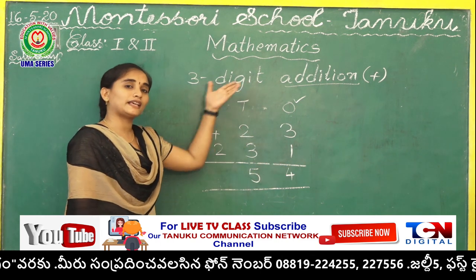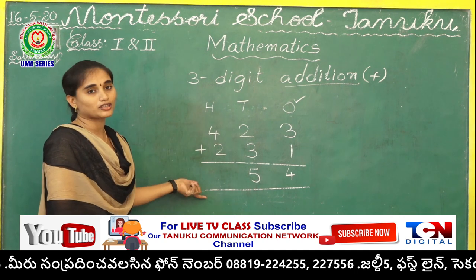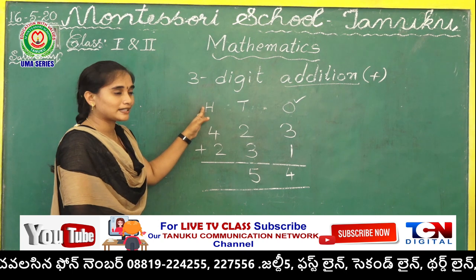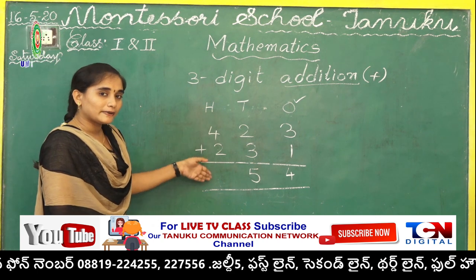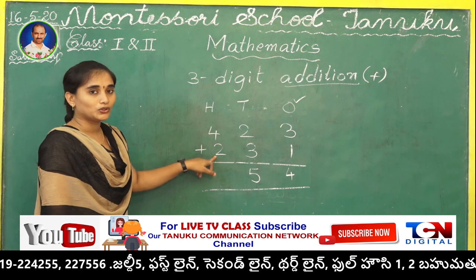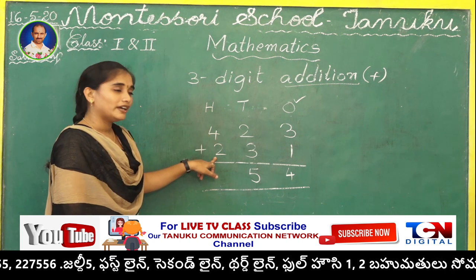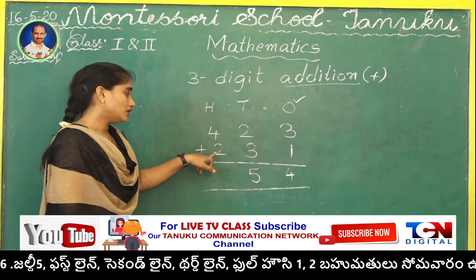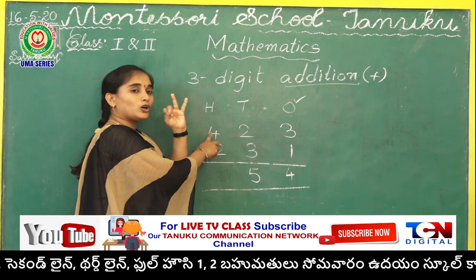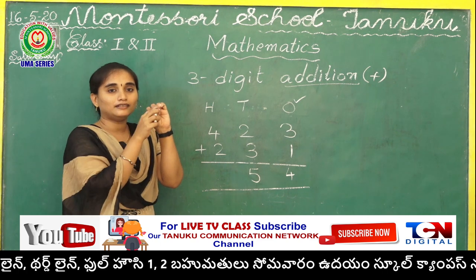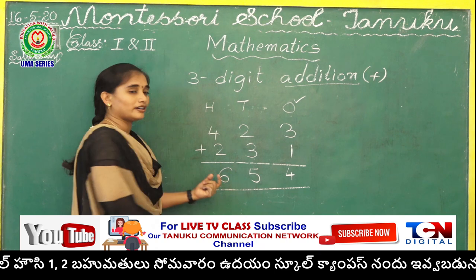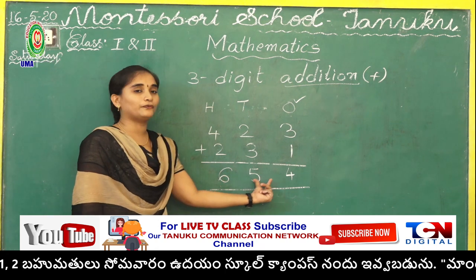Here the extra digit is there — the hundreds place — but you have to repeat the same procedure. Same addition procedure. Now hundreds place numbers: 4 and 2. 4 plus 2. Small number is 2, so take 2 fingers. After 4 — 5 and 6. So the answer we got is 654.